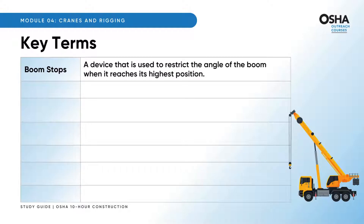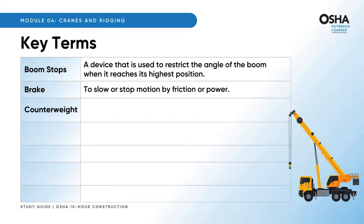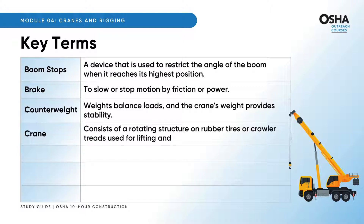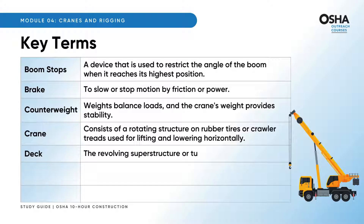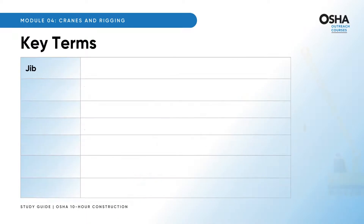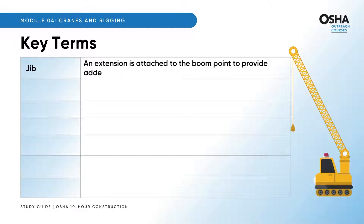Boom stops — a device used to restrict the angle of the boom when it reaches its highest position; break — to slow or stop motion by friction or power; counterweight — weights that balance loads and the crane's weight, providing stability; crane — consists of a rotating structure on rubber tires or crawler treads used for lifting and lowering horizontally; deck — the revolving superstructure or turntable bed; drum — the spool or cylindrical member around which cables are wound for raising and lowering loads; hoist — used to lift and lower load; jib — an extension attached to the boom point to provide added boom length for lifting specified loads.